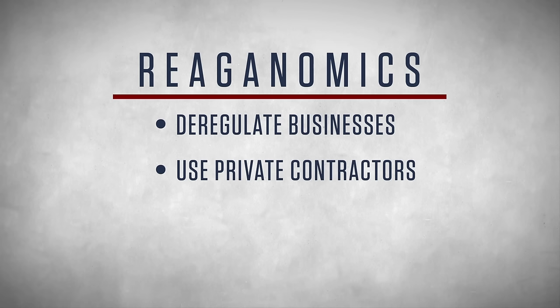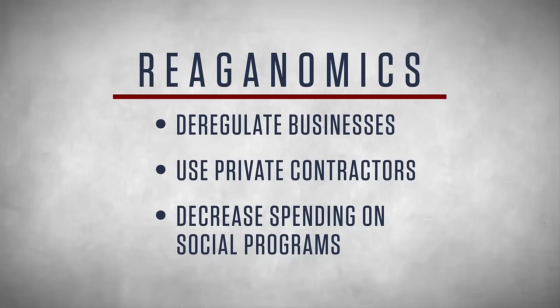Reaganomics wasn't just about tax cuts. The policy had three other central points: deregulating businesses, turning government services over to private contractors, and decreasing spending on domestic social programs, including food stamps, social security, and disability insurance.